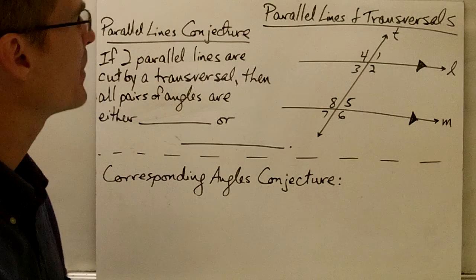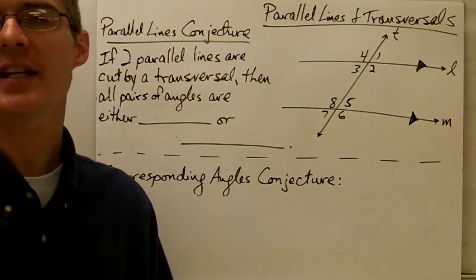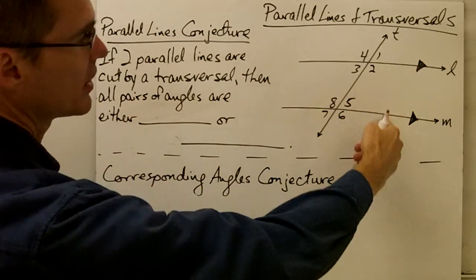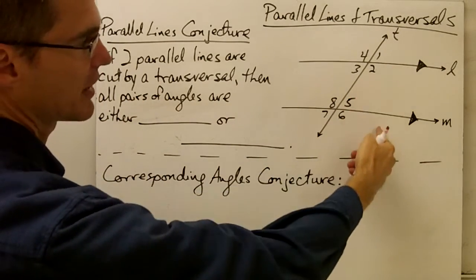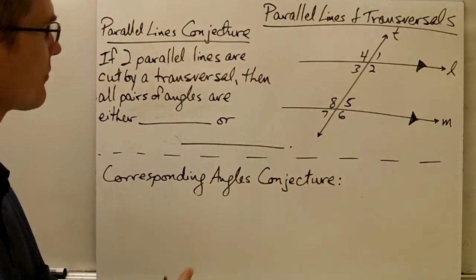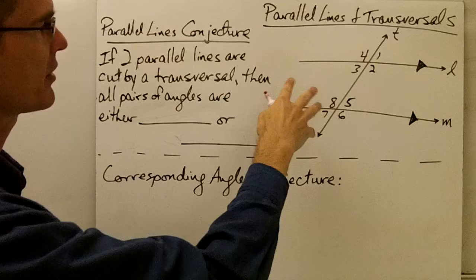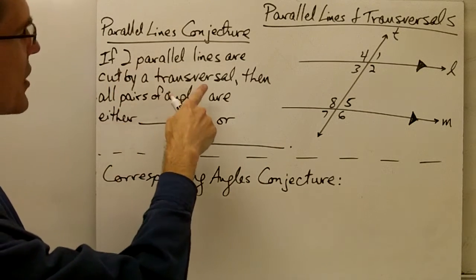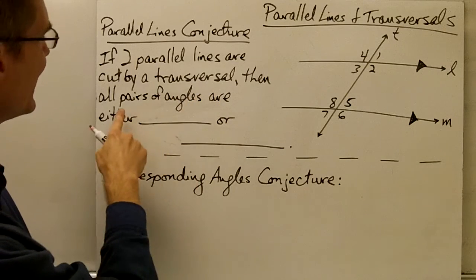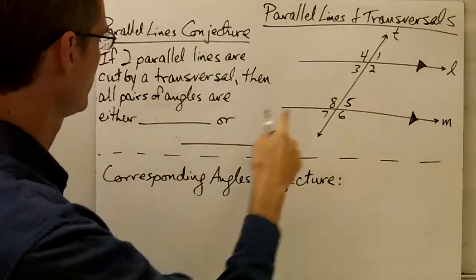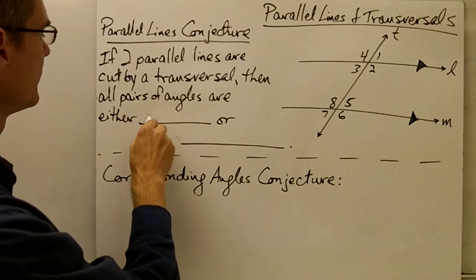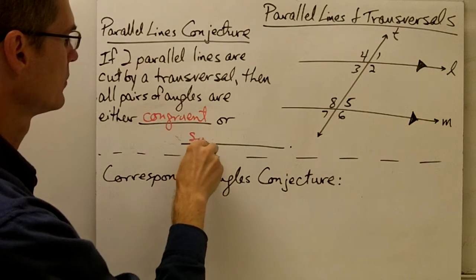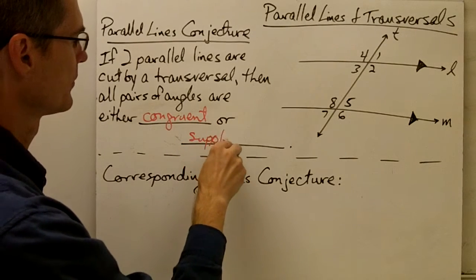We're going to start out with the parallel lines conjecture. In a previous video, we had something called the intersecting lines conjecture — this is kind of similar. Based on a picture I have here of two parallel lines cut by a transversal, and some explorations I've already done, I'm going to make this conjecture: if two parallel lines are cut by a transversal, then all pairs of angles formed are either going to be congruent or supplementary.